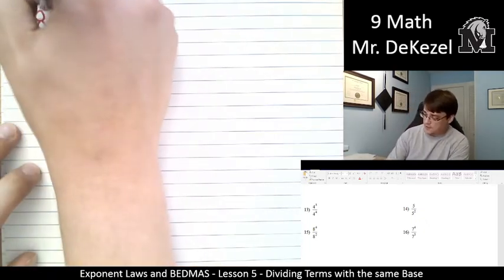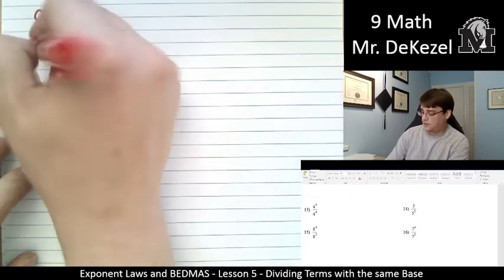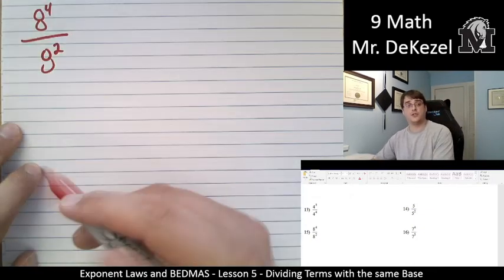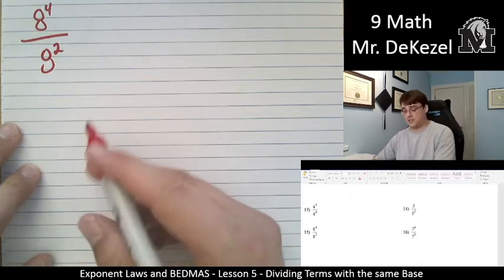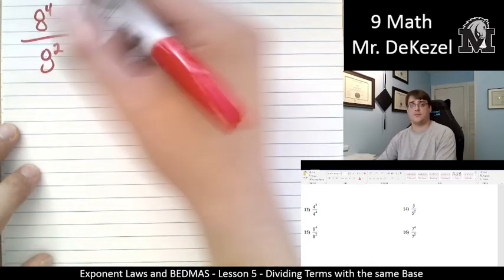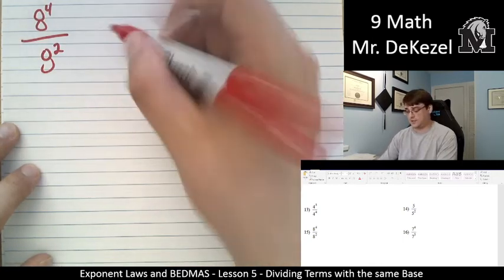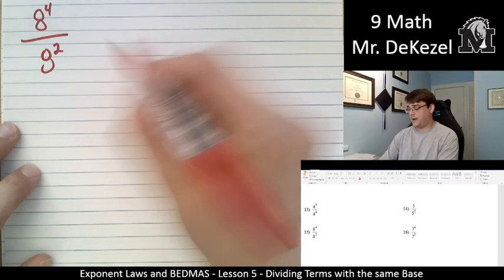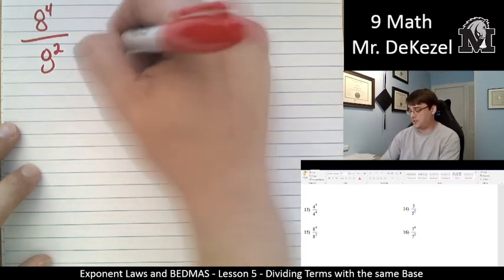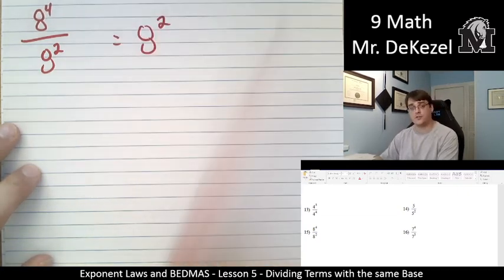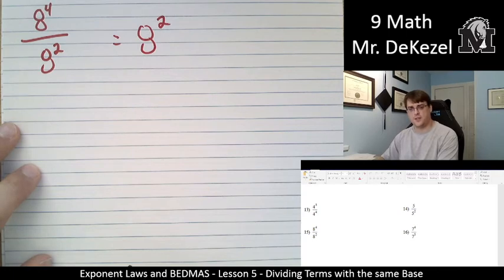Next one is 8 to the power of 4 divided by 8 to the power of 2. 4 minus 2, because they have the same base, we are going to subtract the exponents. So 4 minus 2 is 2. So this is 8 to the power of 2. It's all positive exponents, so that's OK.